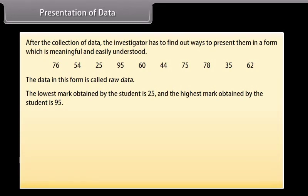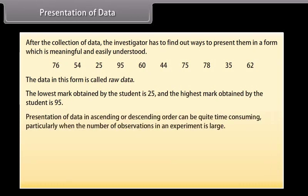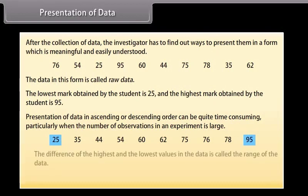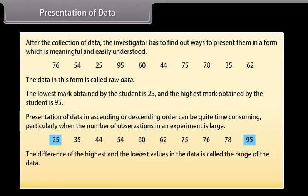The lowest mark obtained by the student is 25 and the highest mark obtained is 95. If we write these numbers in ascending or descending order, then it would be easy for us to see the highest or the lowest marks. Presentation of data in ascending or descending order can be quite time consuming, particularly when the number of observations is large. Now we can clearly see that the lowest marks are 25 and the highest marks are 95. The difference of the highest and the lowest values is called the range of the data. So the range in this case is 95 minus 25, which is equal to 70.